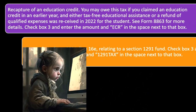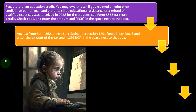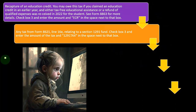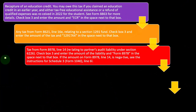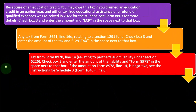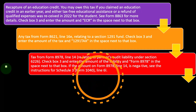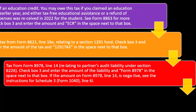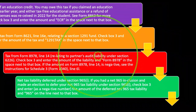Tax software can help with these situations as well. Any tax from Form 8621 line 16e related to a section 1291 fund — check box 3 and enter the amount with '1291 tax' in the space next to the box. Tax from Form 8978 line 14 relating to partners' audit liability under section 6226 — check box 3 and enter the amount with 'Form 8978' in the space next to the box.